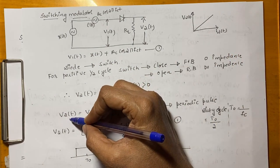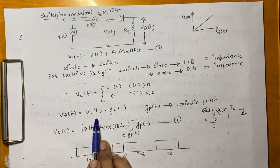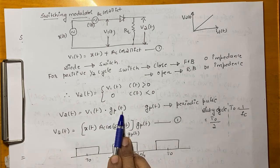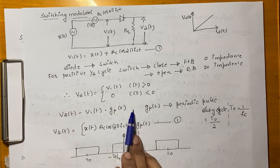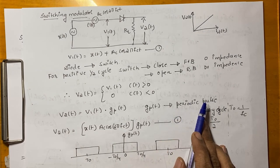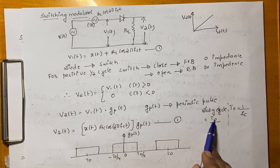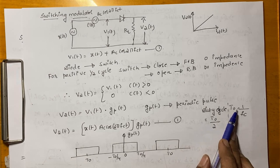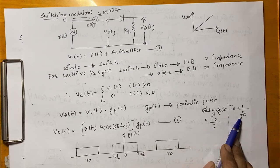That is V2(t) can be expressed as V1(t) into GP(t). So, what is that GP(t)? GP(t) is nothing but a periodic pulse wherein the duty cycle is equal to T0 divided by 2 where the T0 is nothing but 1 over Fc.